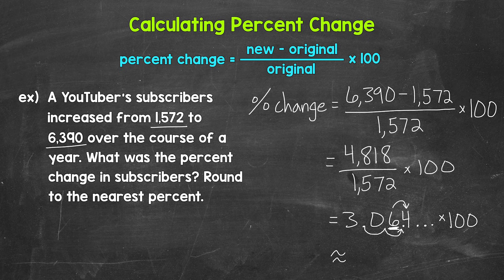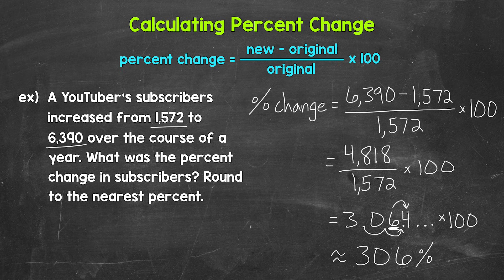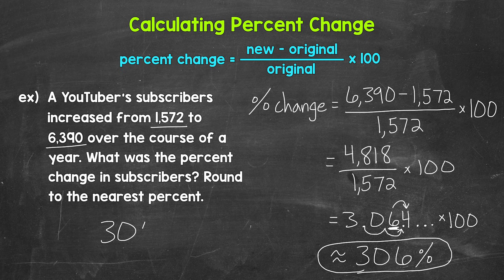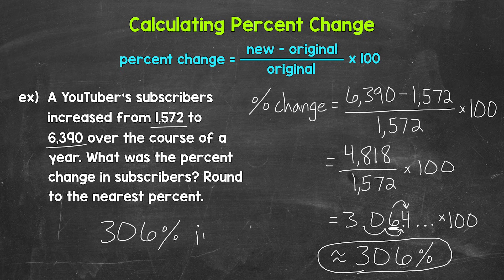So this is approximately, and I'm using the approximately symbol here since we are rounding, approximately 306 percent. Now that's positive, so that tells us we had an increase. So what was the percent change in subscribers? Well, there was approximately a 306 percent increase.